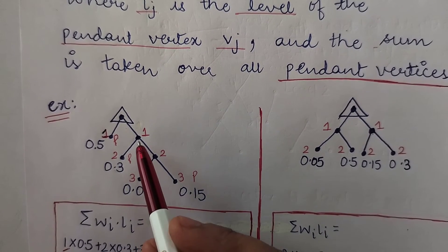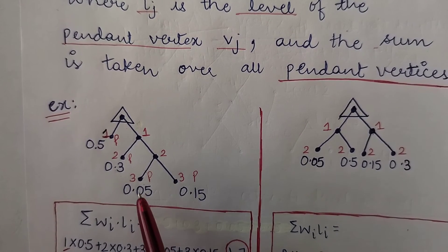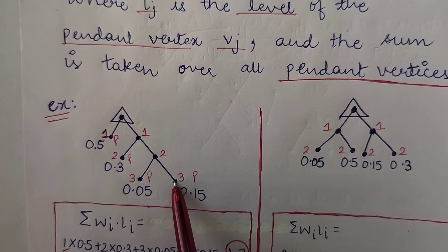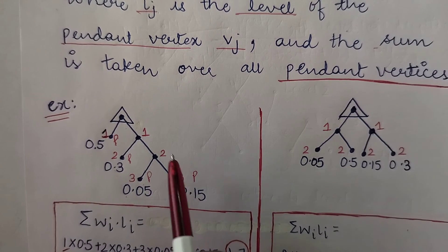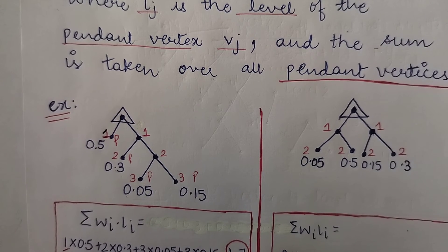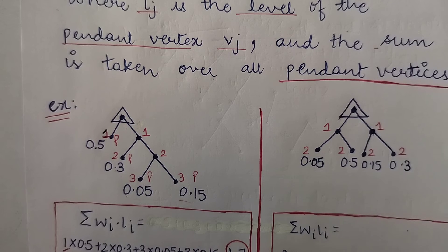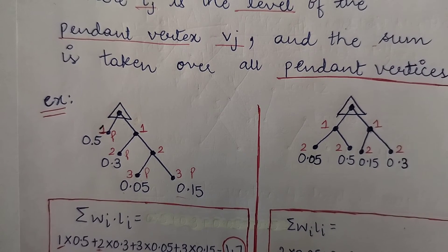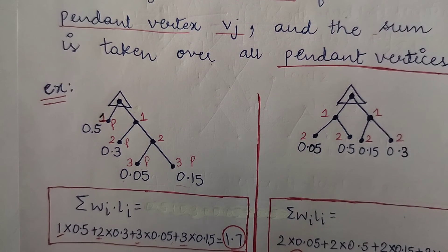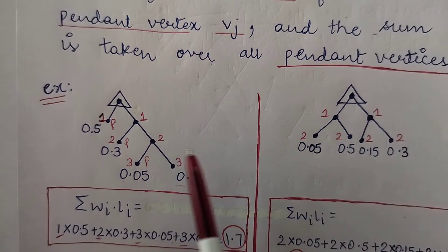For the next pendant vertex, its path length is 1, 2, 3 — so 3 multiplied by its weight of 0.05. The following pendant vertex also has a path length of 1, 2, 3, so 3 multiplied by its weight of 0.5. The sum of the products of the path length and respective weights gives the weighted path length of the tree, which for this tree is 1.7.